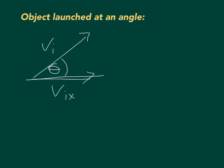V initial x is the horizontal component, and V initial y is the vertical component. In the first kind of problem we did, the angle was basically zero, so V initial x was V initial and V initial y was zero. But now that's not going to be true — we're going to have both a V initial x and a V initial y, because we are launching at an angle.